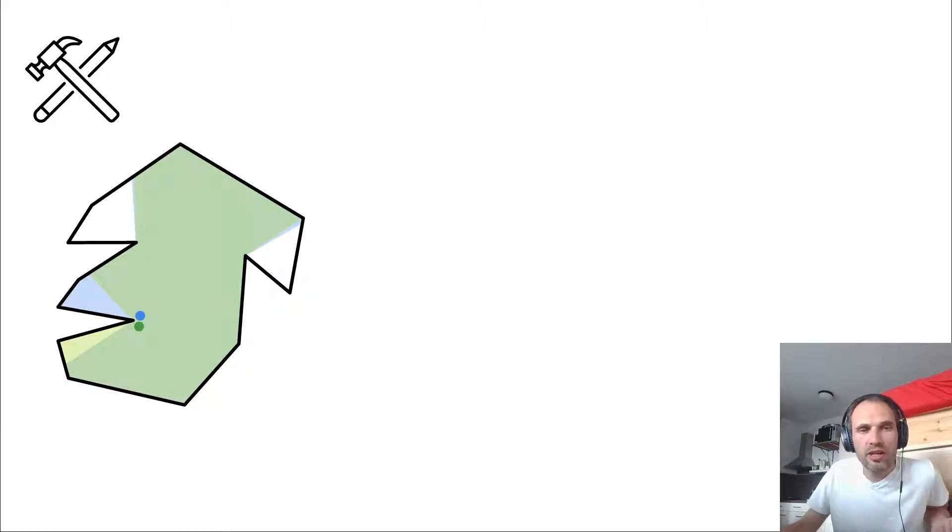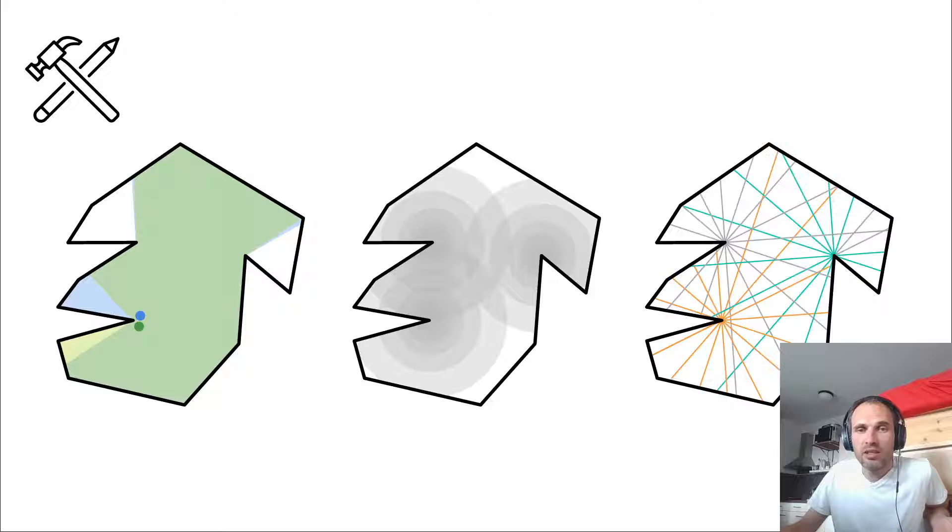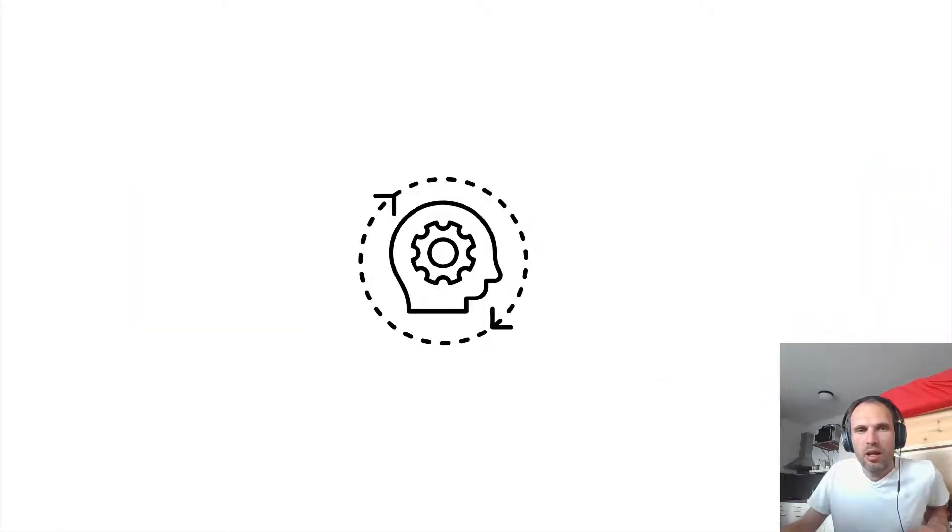And that idea enables us to find a polynomial size candidate set. So the idea is, you're close to reflex vertex, more guards, further away, less guards. And the way to do this is we just shoot these rays into all directions, and then we take all intersection points, and then this will more or less satisfy everything we need.